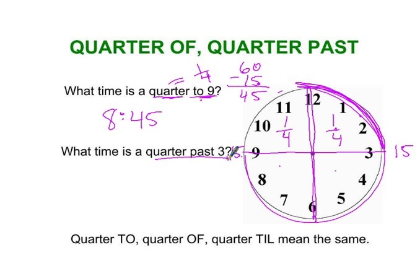What about a quarter past 3? This is a quarter of an hour after 3 o'clock. And a quarter of an hour of course is equal to 15 minutes. So the answer is 3:15.